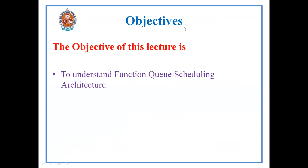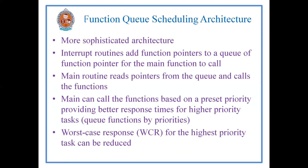The main objective of today's session is to understand function queue scheduling architecture. In the previous sessions, we have already seen two different architectures used in embedded systems: the round robin architecture and the round robin with interrupts architecture. In round robin, all tasks are given equal priority and whichever IO device requires service, that device is provided the service.